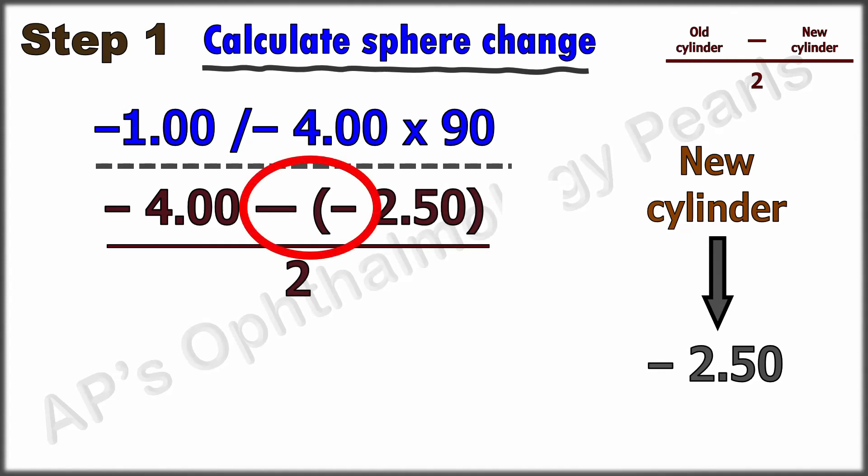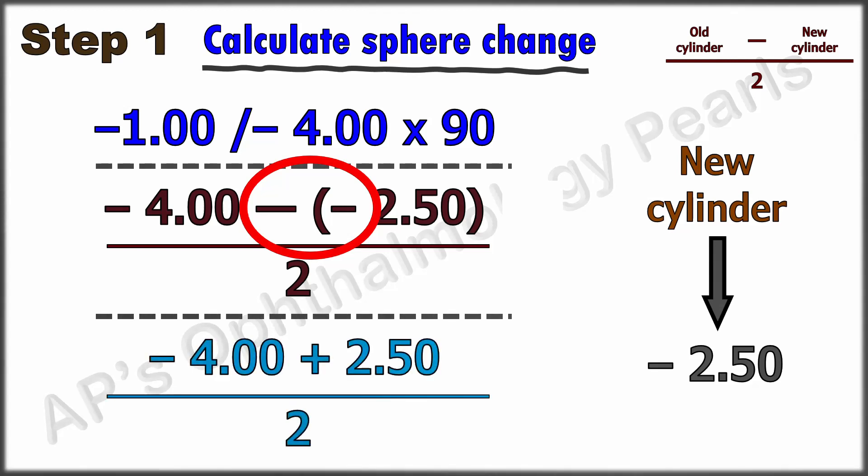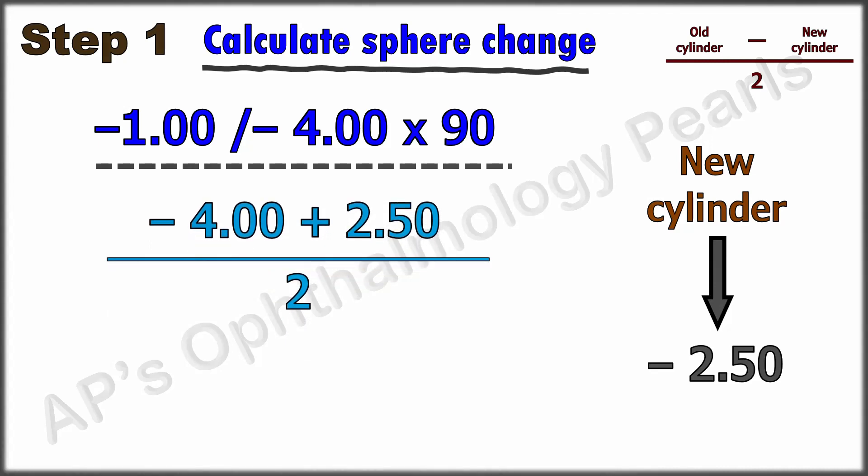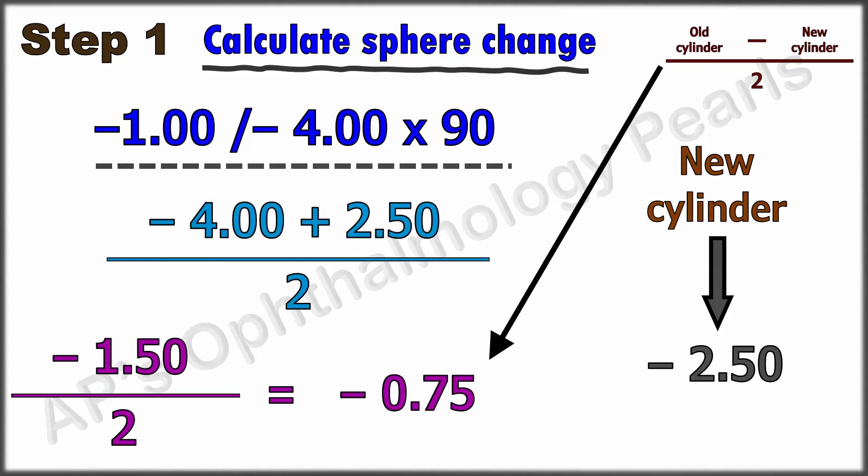Resolving this part of the equation, we get minus 4 plus 2.5, and we divide this by 2. Taking the calculation further, minus 4 plus 2.5 divided by 2 equals minus 1.5 divided by 2, which equals minus 0.75. This is the change in sphere obtained using this formula.